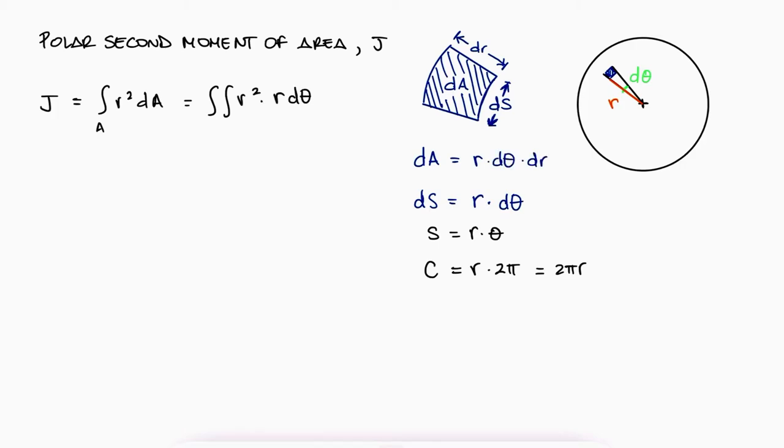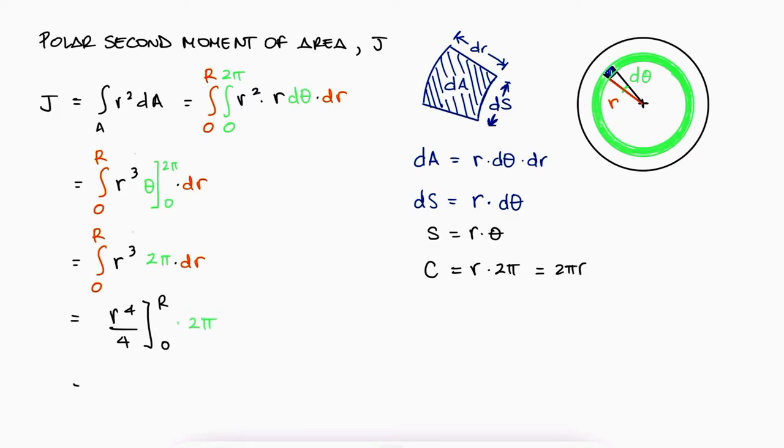The area of dA would therefore be r d theta times dr, and we can substitute that in the integral. For the integral to cover the whole cross-section area, and in that way account for the entire polar second moment of it, d theta would vary from 0 to 2pi, which would cover the area of a ring, and the radius of those rings would vary from 0 to the radius of the rod C, or in this case, let's call it capital R. The first integral would just be theta evaluated from 0 to 2pi, and the second integral would be r to the fourth over 4, evaluated from 0 to capital R. In terms of the diameter, this expression would be pi over 32 times d to the fourth. This would be the expression for the polar second moment of area for a solid rod.